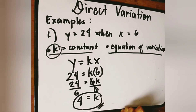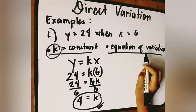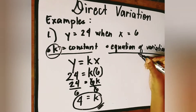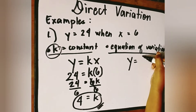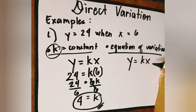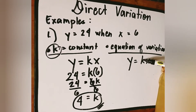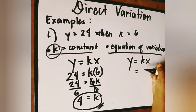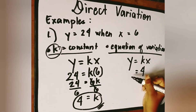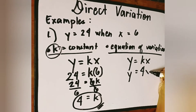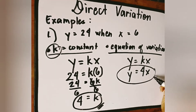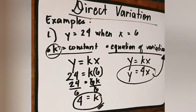The value of k is 24 divided by 6, which is 4. So 4 is the value of the constant. For the equation of variation, the formula is y is equal to k times x. Since k is 4, we substitute 4 for k. So the equation of variation is y is equal to 4x. That's how easy it is to solve direct variation.